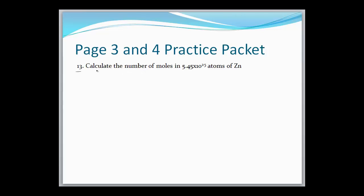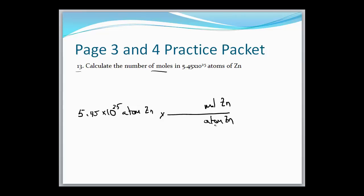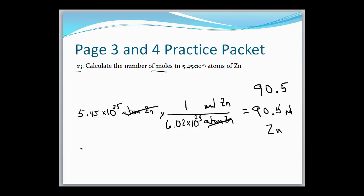Number 13: calculate the number of moles in 5.45 × 10²⁵ atoms of zinc. This is similar to the last problem. Put atoms in the denominator, and go from atoms of zinc to moles of zinc — one mole contains 6.02 × 10²³ atoms. Cancel out the atoms and do the math: 5.45 × 10²⁵ divided by 6.02 × 10²³ gives us 90.5 moles of zinc.